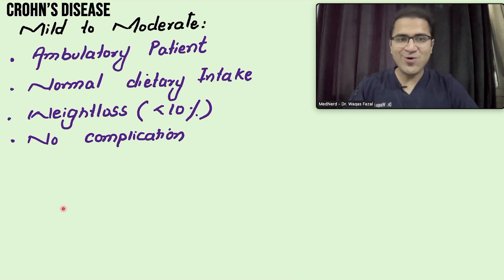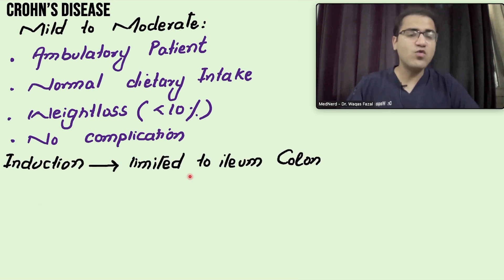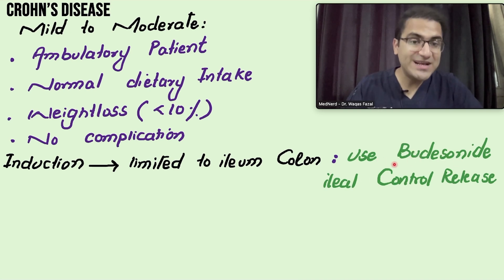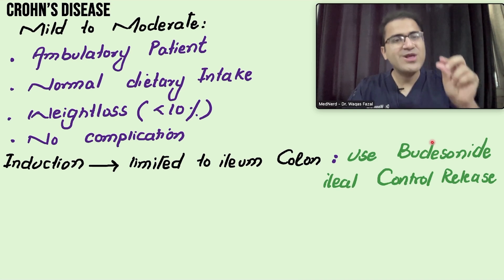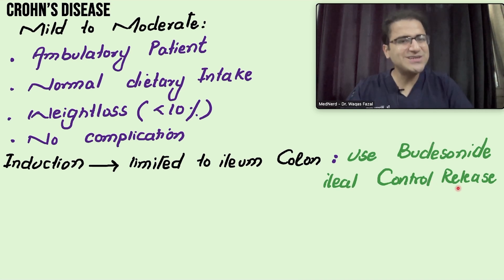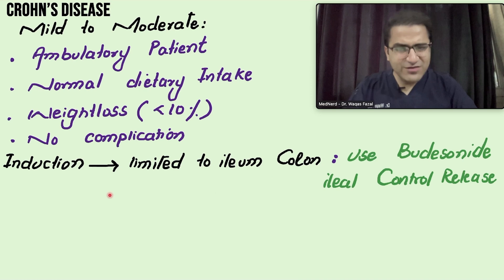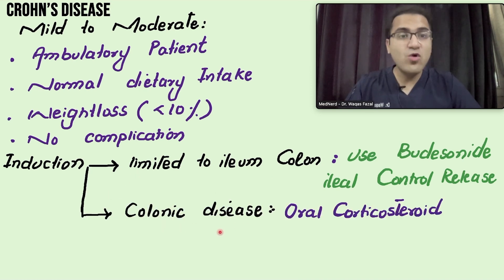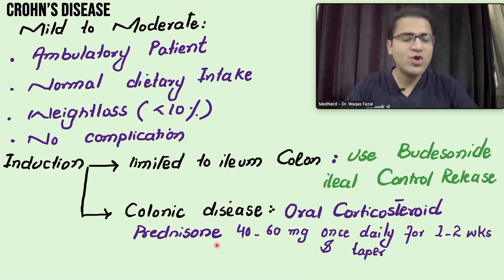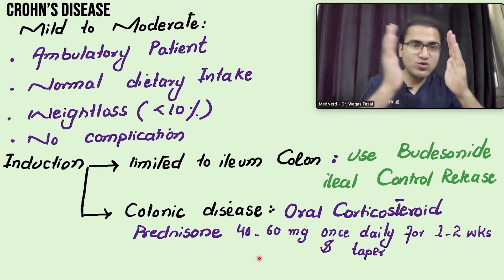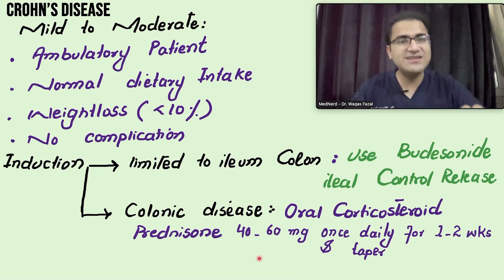Coming to induction therapy in mild to moderate disease — it depends which part of the intestine is involved. If disease is limited to the ileum and right side of the colon, use oral steroid budesonide, controlled-release 9 mg orally once daily. It releases slowly in the intestine to reduce inflammation. If it involves the whole colon, oral corticosteroid prednisone 40–60 mg orally once daily for one to two weeks is given, then slowly tapered over the next two to three weeks and stopped.